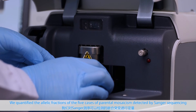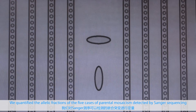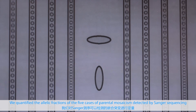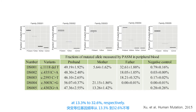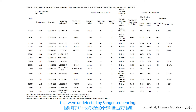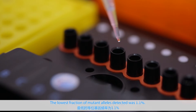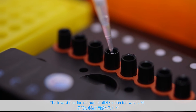We quantified the allelic fraction of the five cases of parental mosaicism detected by Sanger sequencing at 13.3% to 32.6%, respectively. We then detected and validated 15 more cases of parental mosaicism that were undetected by Sanger sequencing. The lowest fraction of mutant alleles detected was 1.1%.